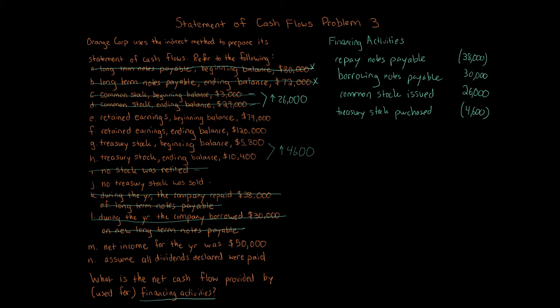We're done with those transactions. Moving along, we've only got four items left: E, F, M, and N. This is the most difficult part of financing activities — and arguably the most difficult part of the entire statement of cash flows — the dividends. This is the part students have the most trouble with. You've got to do some calculations and think about what's going on.